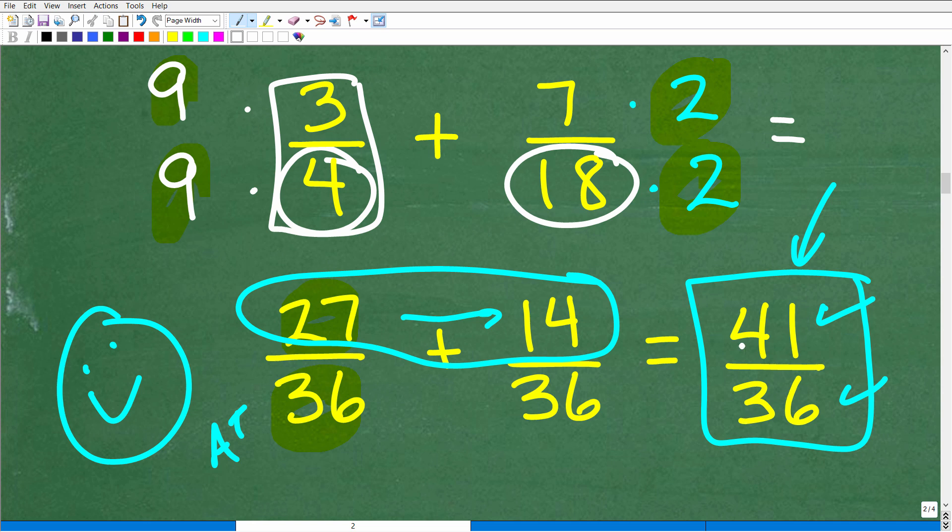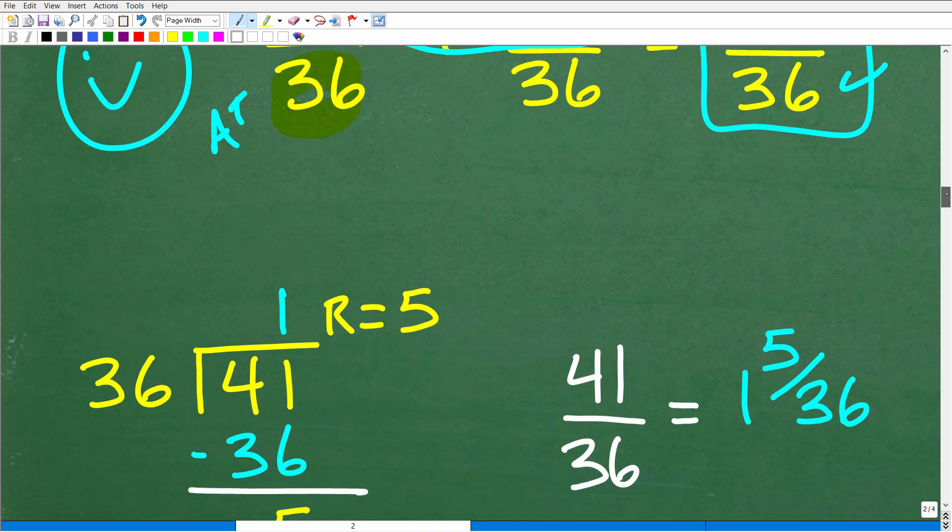As long as it's reduced, it's perfectly fine. But a lot of you are bothered by this numerator being larger than this denominator. So you want to turn it into a mixed number. So how do I do that? Well, we literally have to take this 41 and divide it by 36.